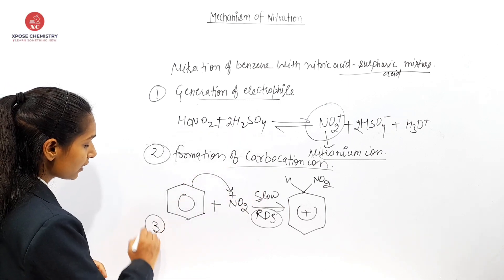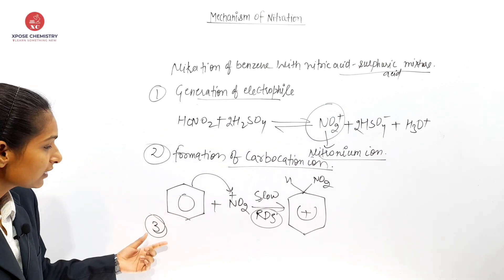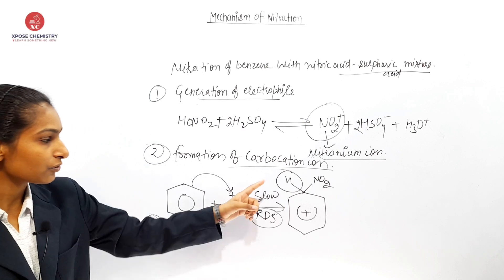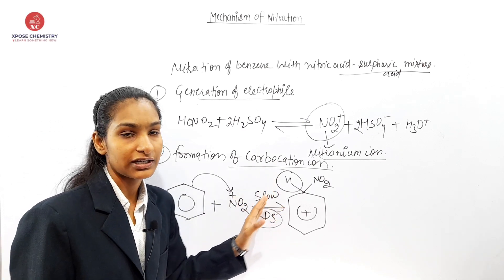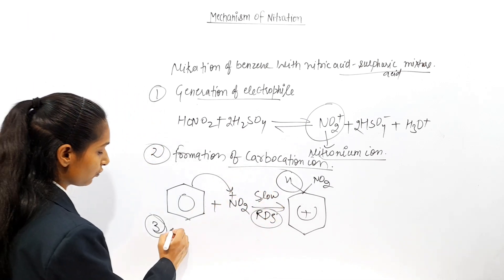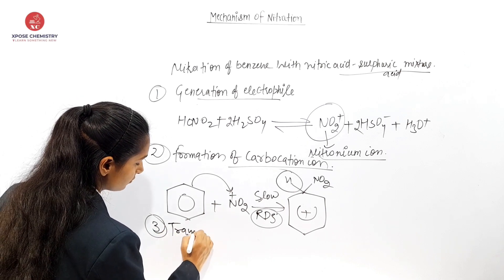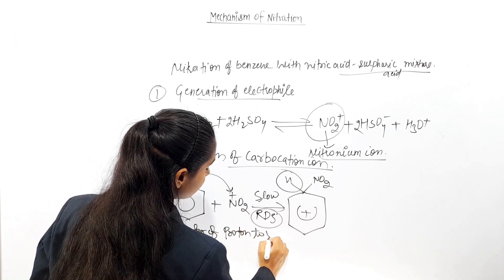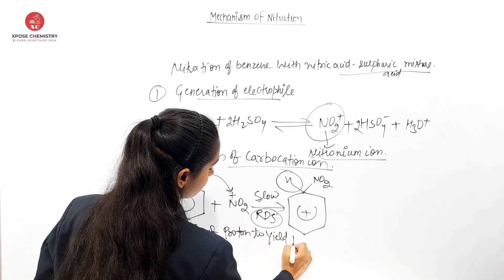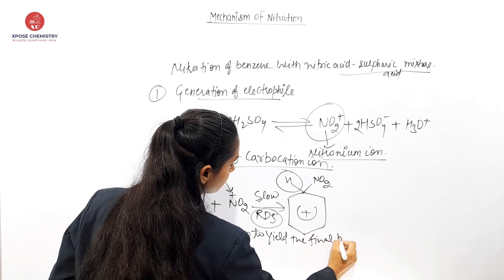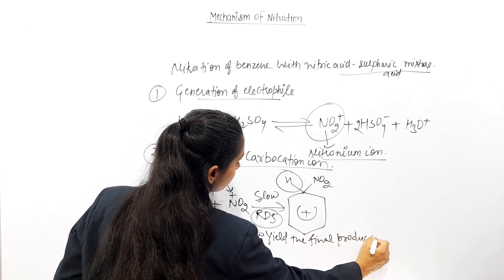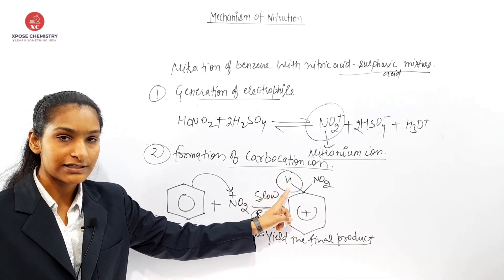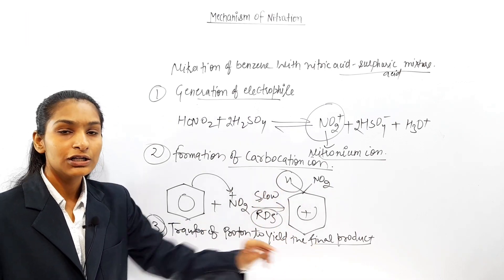Now in the third step, we will get the final product. In the third step, H — the hydrogen proton — will transfer. So transfer of proton to yield the final product. This is the aromatic ring; this is the proton — it will transfer, and the final product will be obtained.